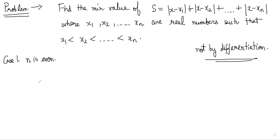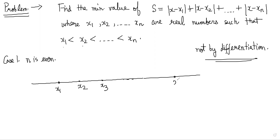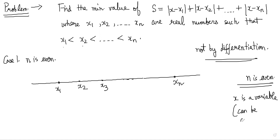When n is even, the number of points is even. Let's draw the number line and mark all these points: x1, x2, x3, and so on till xn. We want to find the minimum value of this expression. Here x is a variable — x can be anywhere on the number line — and we need to find where to place x so that the value of S is minimized.